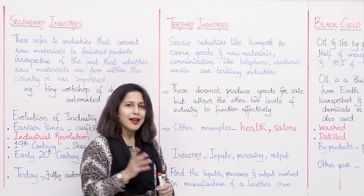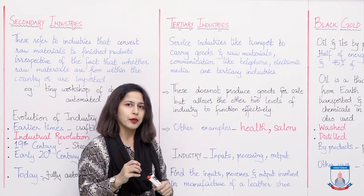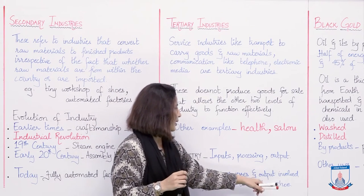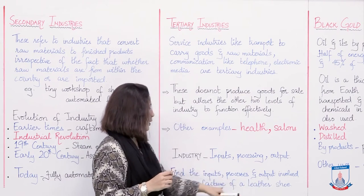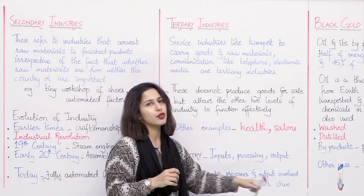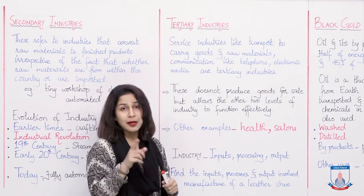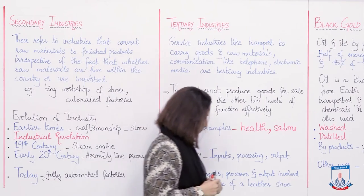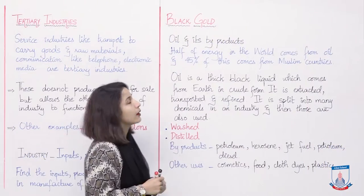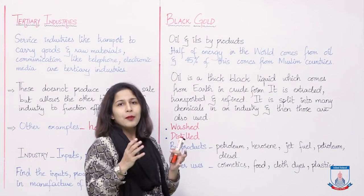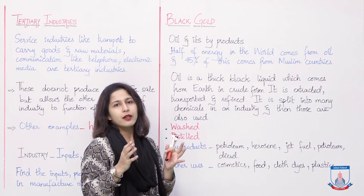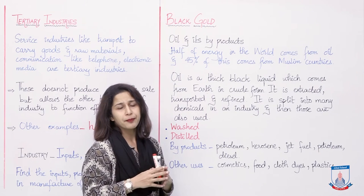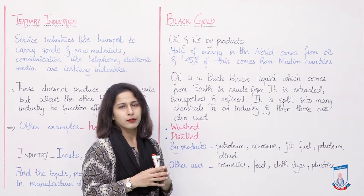Now, I have a task for you people — find the inputs, processes, and output involved in the manufacture of a leather shoe. I will ask you this in the next lecture. We have now seen primary, secondary, and tertiary industries, looked at their examples. Now let's move to their importance.